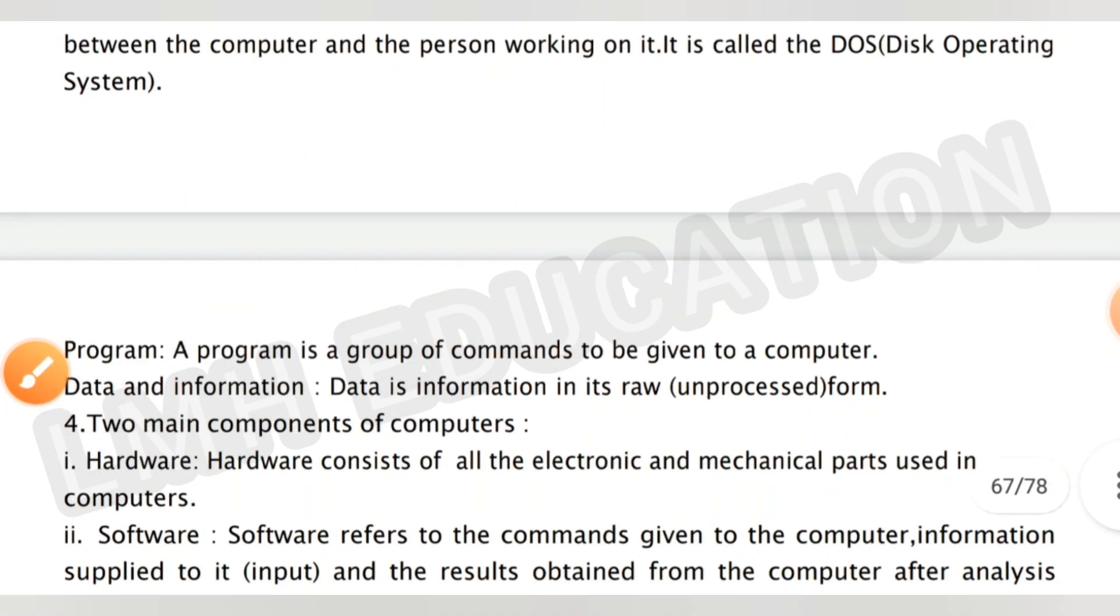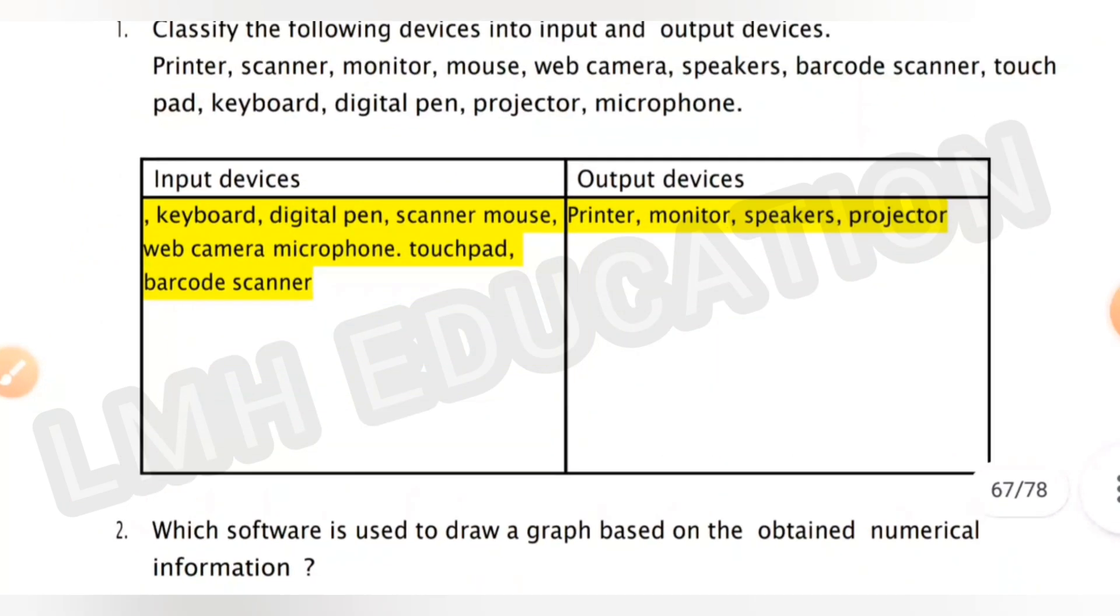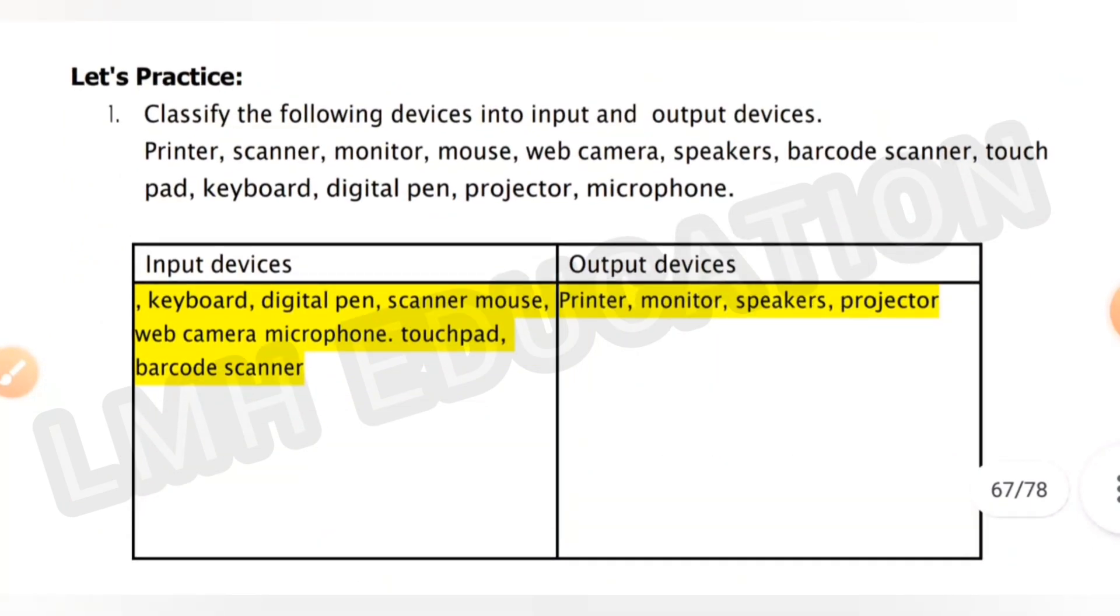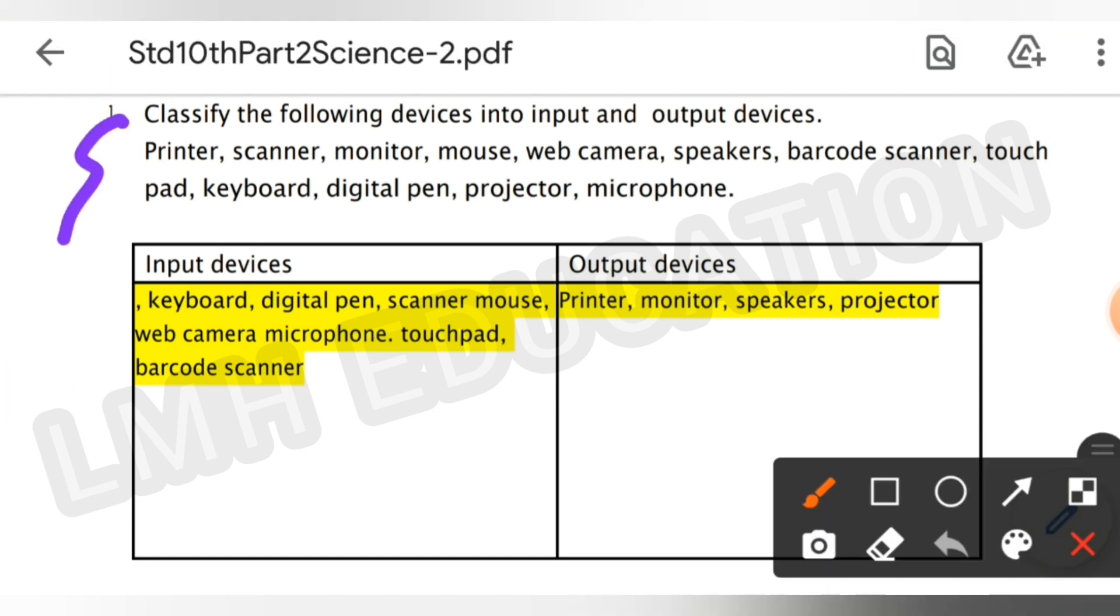We will move on to question number one. The first question is: classify the following devices into input and output devices. Here are the names of some devices: printer, scanner, monitor, mouse, webcam, speakers, barcode scanner. These are the names of some devices. Now you have to classify them into input and output devices.